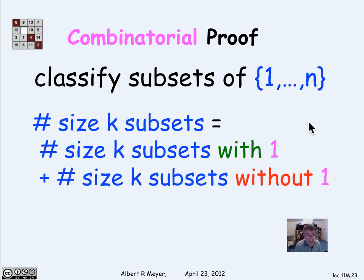Now, together, these things are going to be all the size k subsets. And of course, these are disjoint sets. So indeed, the number of size k subsets by the sum rule is equal to the number of size k subsets with a 1 plus the number of size k subsets without a 1.